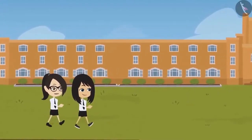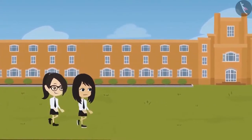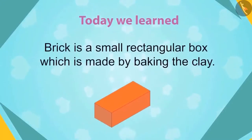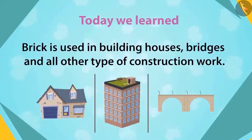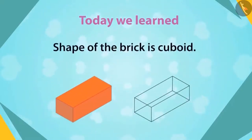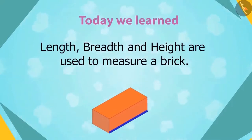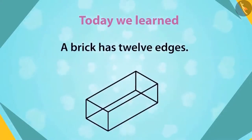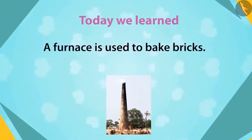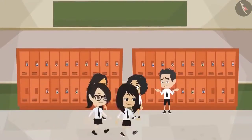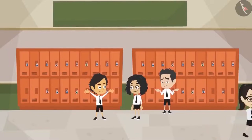A brick is like a small rectangular box which is made by baking clay. A brick is used in building houses, bridges, and all other types of constructions. The shape of the brick is cuboid. The size of a brick is determined by measuring its length, breadth, and height. A brick has 12 edges and 6 faces. Bricks are baked in a furnace. I am waiting for tomorrow because engineer sir will get different sizes of bricks to show us. Me too.